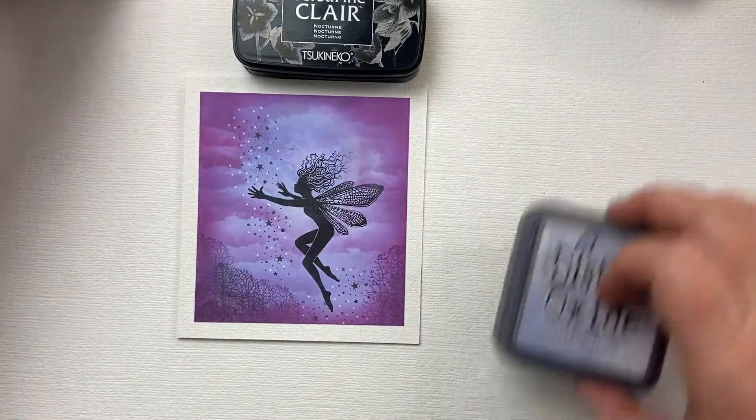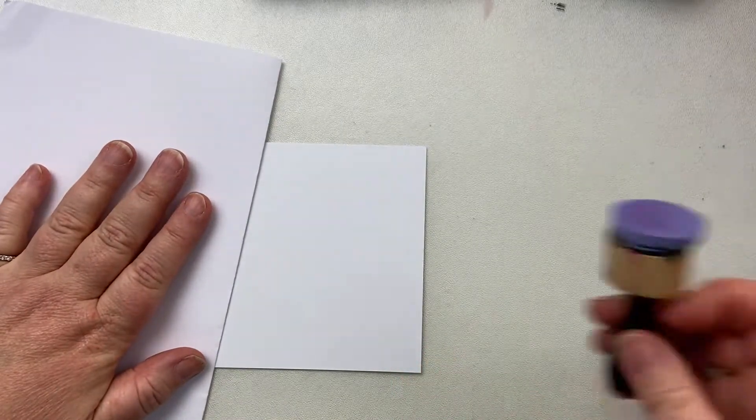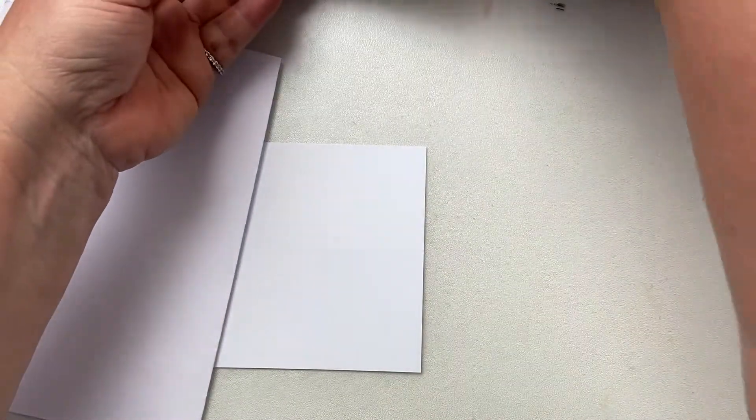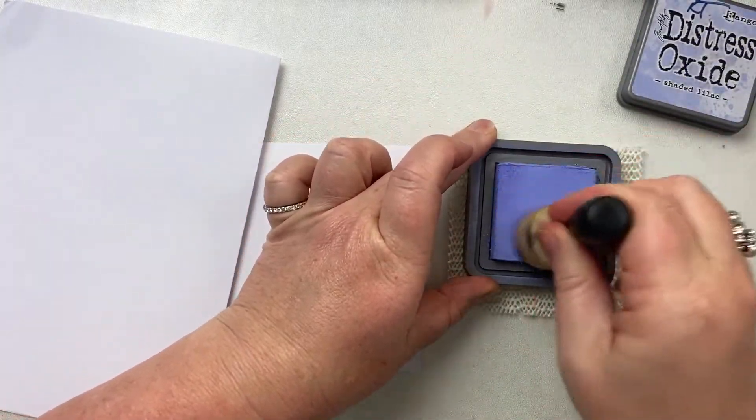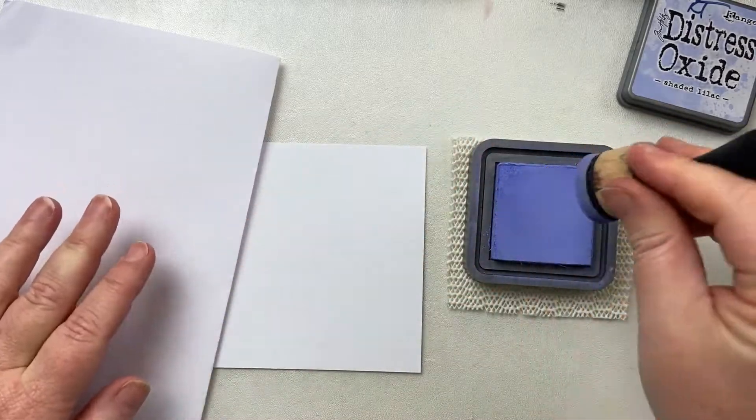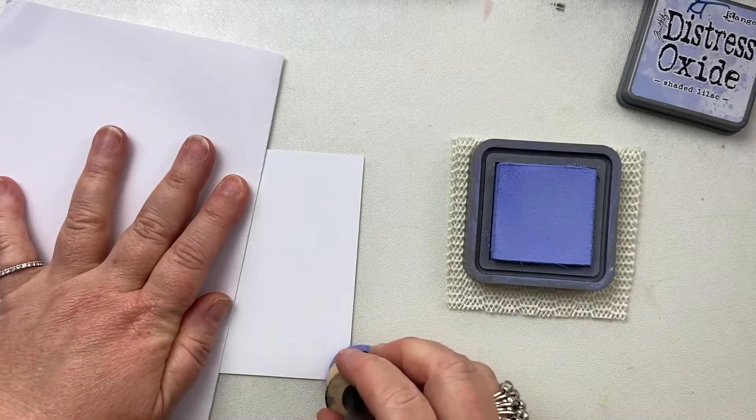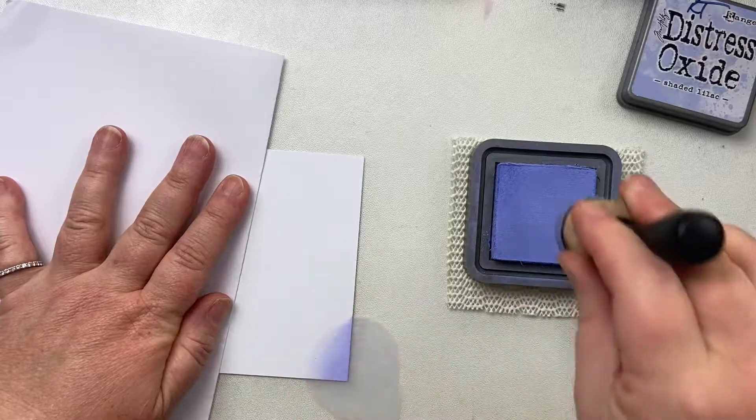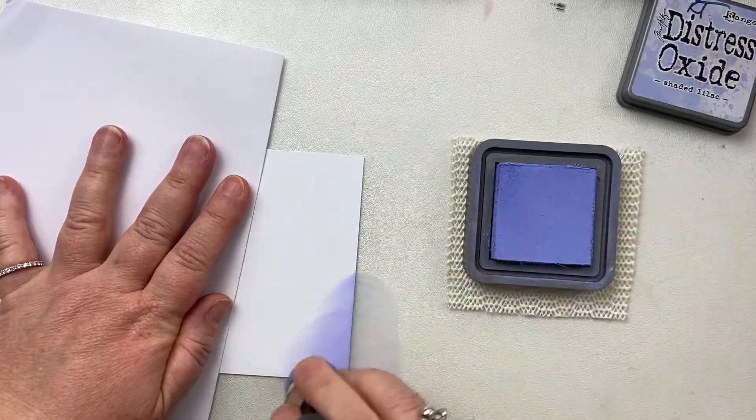So we'll get 12cm by 12cm. I'm using Multifarious cardstock because it's lovely and smooth. It will take this blend well. A piece of copy paper. I've got my blending sponge and I'm starting with Shaded Lilac. First thing I'm going to do is make sure that my blending sponge is well inked. And I'm going to start off the edge of my card and move in a circular motion all over the whole card.